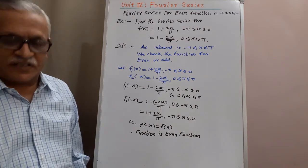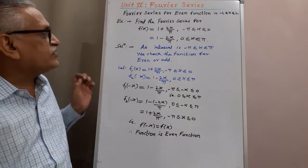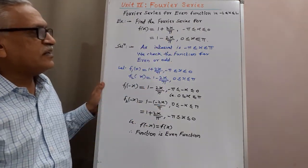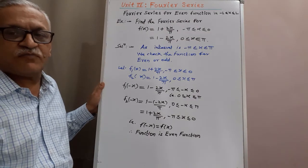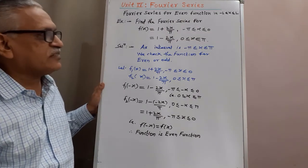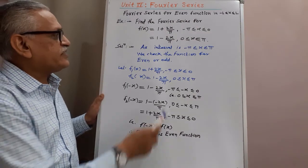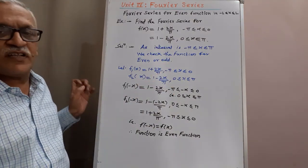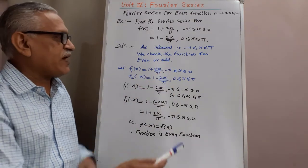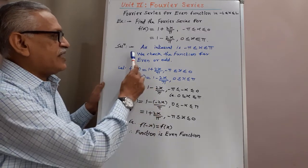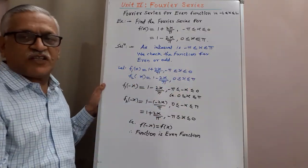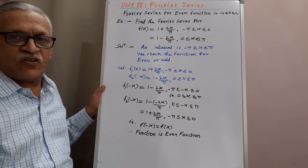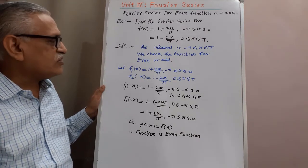Find the Fourier series for the function f(x) = 1 + 2x/π for −π ≤ x ≤ 0, and the second value is 1 − 2x/π for 0 ≤ x ≤ π. As the interval is −π to +π, we can check whether the function is even or odd.